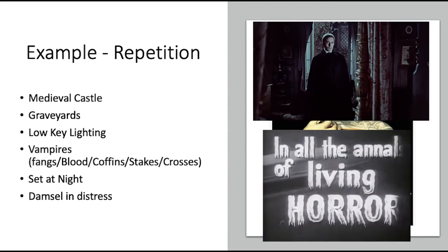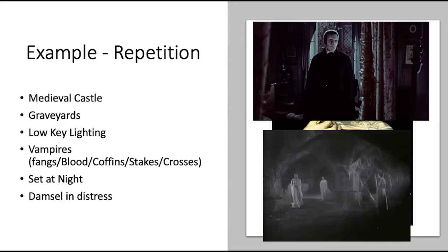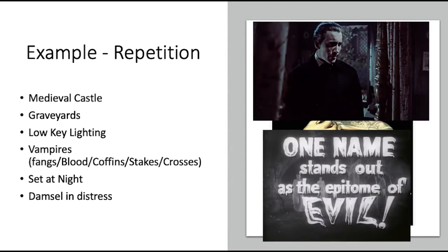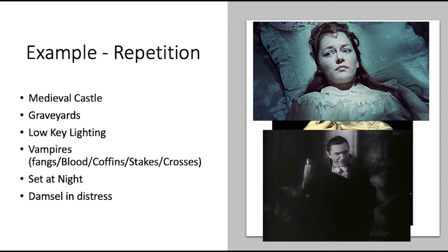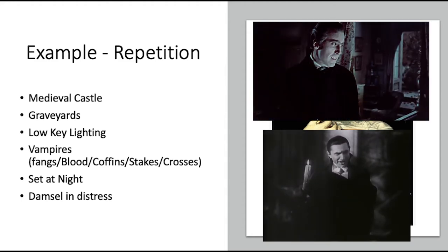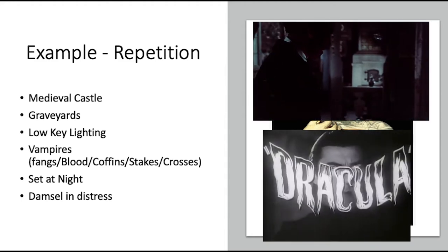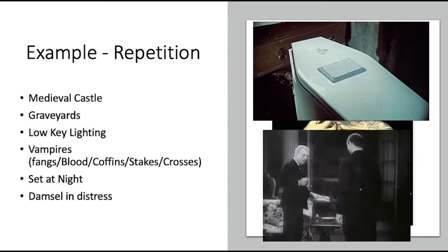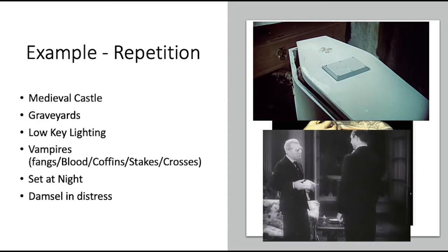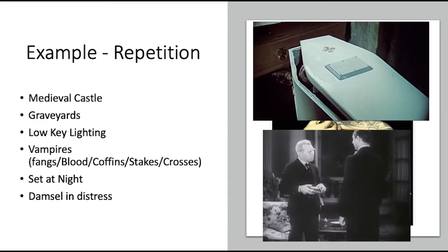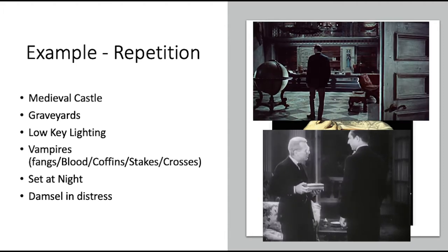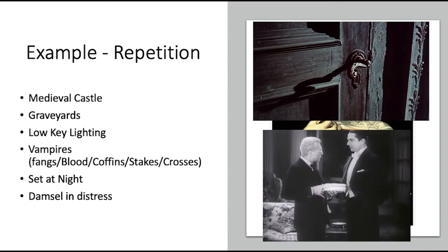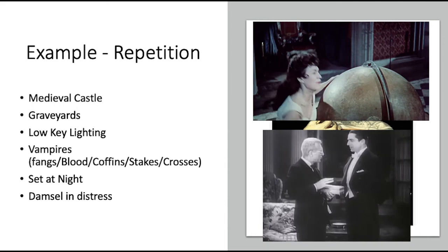For repetition, looking at my example, we have medieval castles, graveyards, low-key lighting, and vampires. In repetition of vampire films there are fangs, blood, coffins, stakes, and crosses. It's set mostly at night and we have a damsel in distress that the heroes must save or rescue from Dracula.